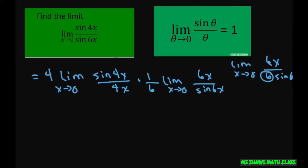Now, since this equals 1, this also equals 1. So finally, what we have is 4, this equals 1, times 1, times 1 sixth, and this equals 1.